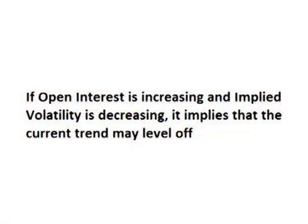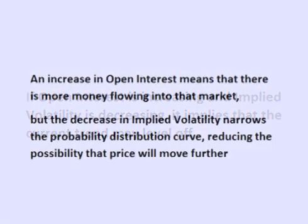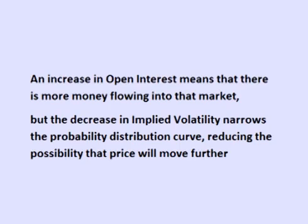If open interest is increasing and implied volatility is decreasing, it implies that the current trend may level off. An increase in open interest means that there is still an increase in contracts for that particular stock or ETF, which means that there is more money flowing into the market. However, the decrease in implied volatility means that the market is stating that the chance of price moving further is decreasing.